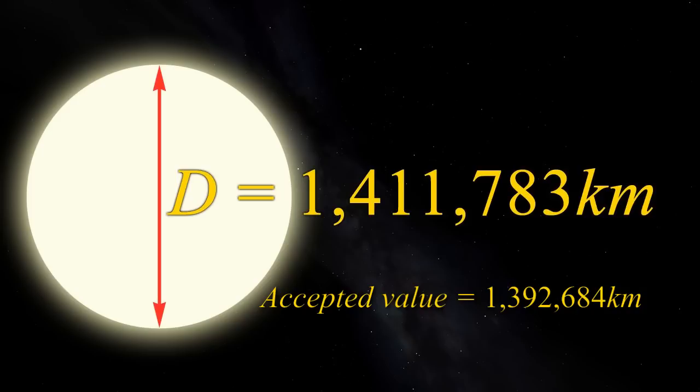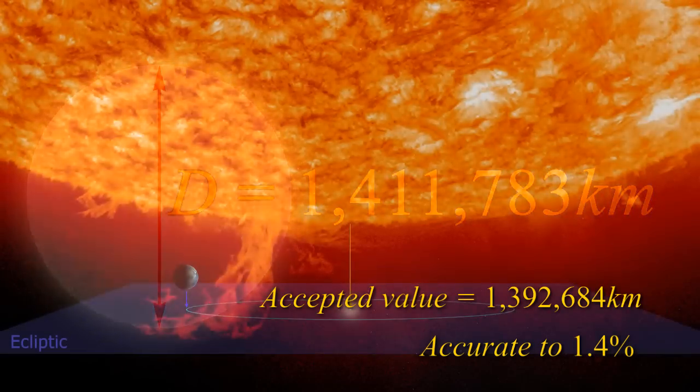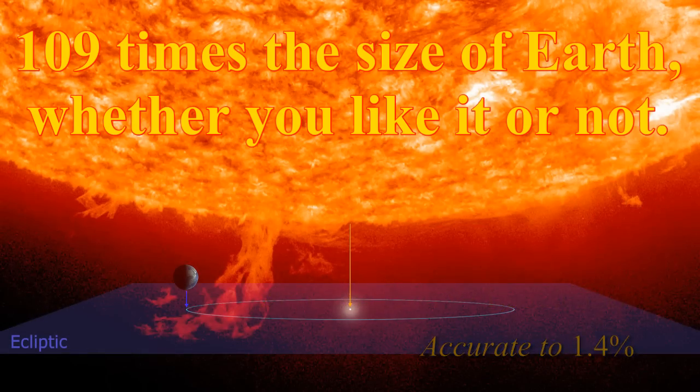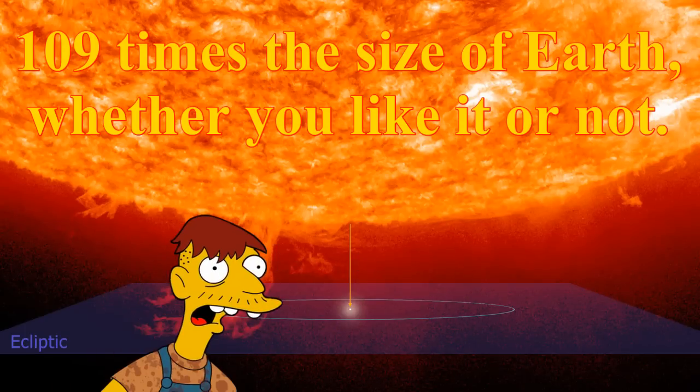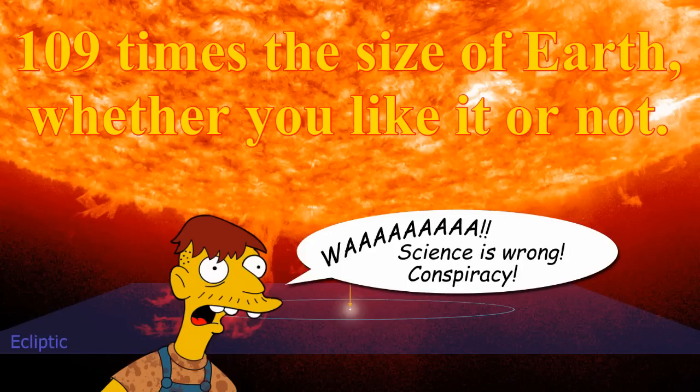So, with simple observations, Alice and Bob have got an answer that's accurate to within 1.4 percent. Not bad for something that's supposedly impossible. The infantile claims of geocentrists that things in space are closer than we're told, and smaller than we're told, are demonstrably garbage. Consequently, every pathetic claim that geocentrists base on these premises is also wrong.